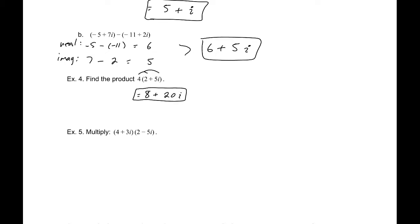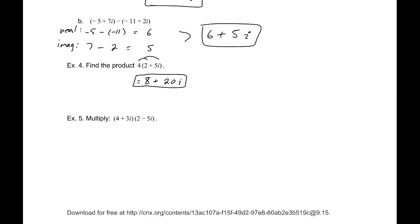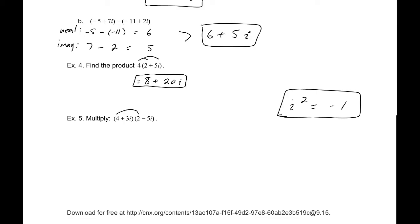Example five: multiply two complex numbers using double distribution. Keep in mind that i squared equals negative one — that fact will be very helpful in simplifying. Distributing gives: 8 minus 20i plus 6i minus 15i squared.